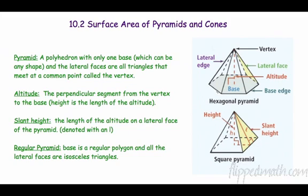The lateral faces meet at a common point called the vertex, so everything collapses down. We have hexagonal pyramids, square pyramids, and things like that. We're going to work mainly with pyramids that have a regular shape on the bottom — regular hexagons, regular quadrilaterals also known as squares. The altitude is the perpendicular segment from the vertex to the base.